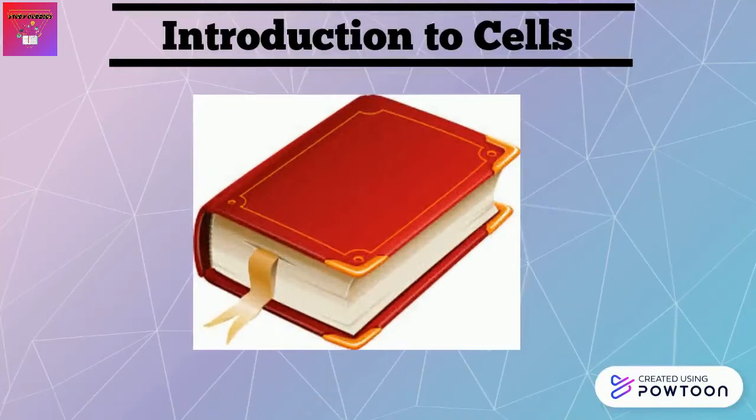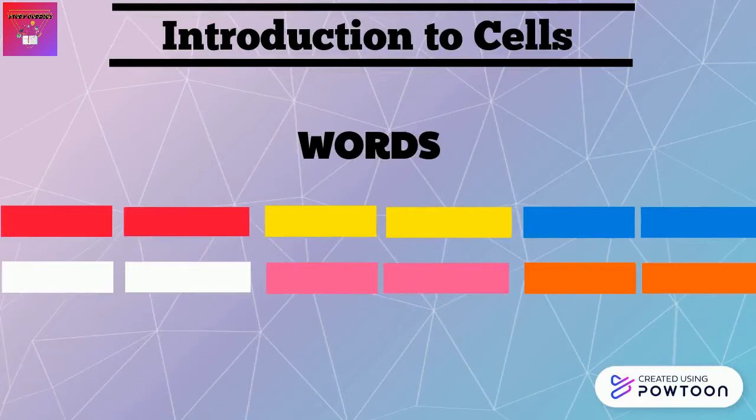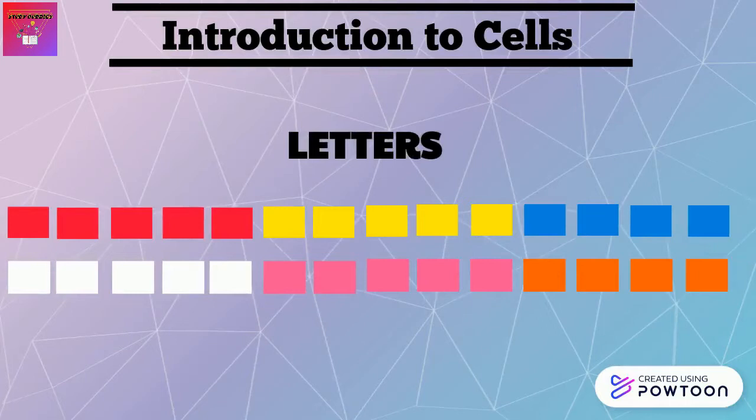We all must have at some point read a storybook or any book. The stories or content inside the book are made up of what we call sentences, and each sentence is made up of words. What makes the words are called letters. Just like this analogy, every single thing in this world is made up of something smaller than it.